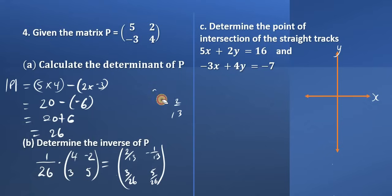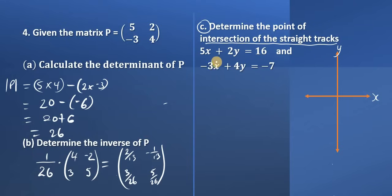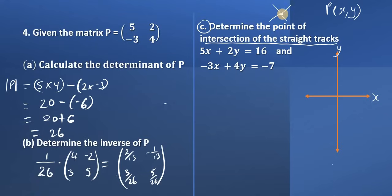Next we turn our attention to part C. For part C we have two equations, and they're asking us to find the point of intersection of the straight tracks — so all they're asking us is to solve the pair of simultaneous equations. Once we solve the pair of simultaneous equations, we get an x value and a y value, which are coordinate pairs, the location of a point. When two straight lines meet they cross at a point, and that's the point we're looking at.